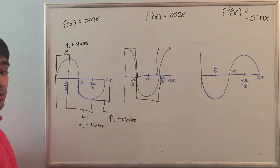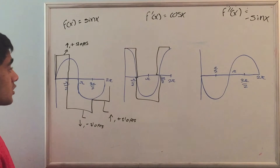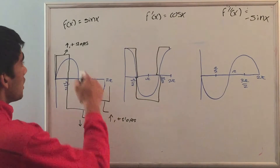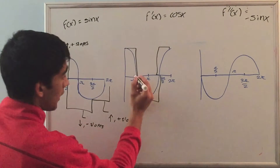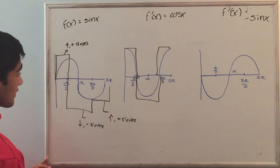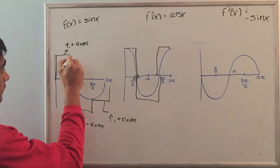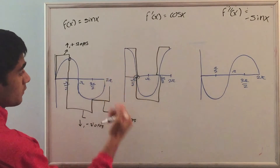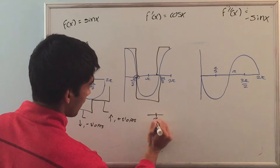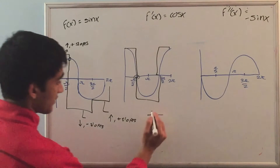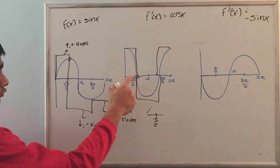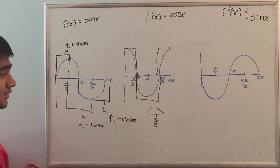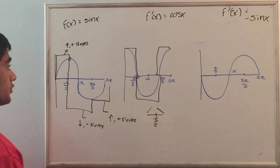The next thing I want to look at are the maxes and mins on the original function. In general, a max or a min occurs when the derivative of a function equals 0. So when you take the derivative of sine x, we get cosine x, and cosine x equals 0 at pi over 2. To the left of pi over 2, the cosine graph is positive, so it has an up-sloping line, and to the right of pi over 2, the derivative is negative, so it's a down-sloping line. The number line test shows kind of like a mountain, so at pi over 2, that would be a maximum.